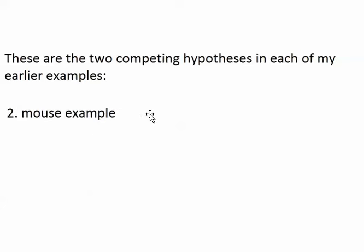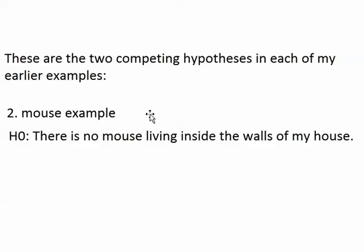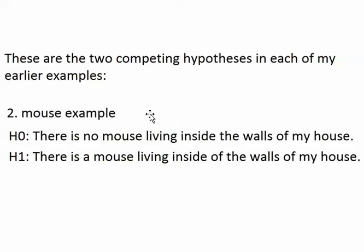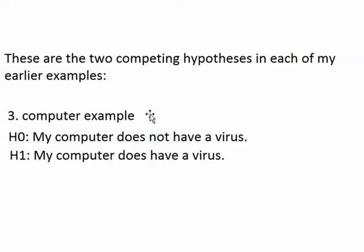In the mouse example, H0, the null, is the possibility that there is no mouse inside the walls of my house, and H1, the alternative, is the possibility that there is a mouse. For the computer example, H0, the null, says that there is no virus, and H1, the alternative, says that there is a virus. So the null is the possibility of no virus, and the alternative is the possibility that there is a virus.